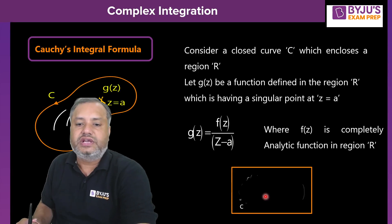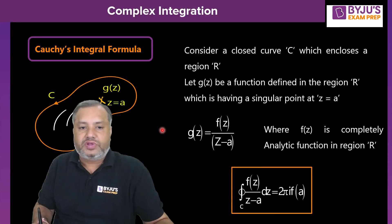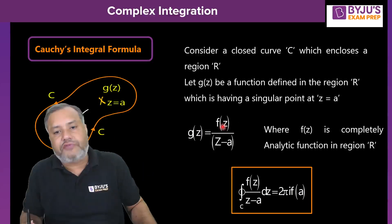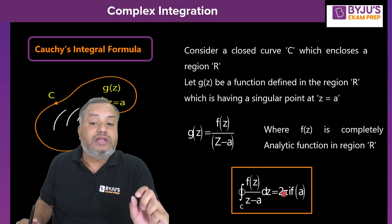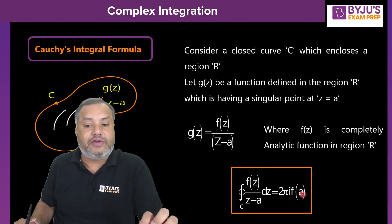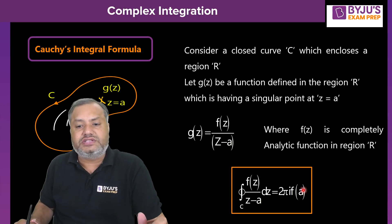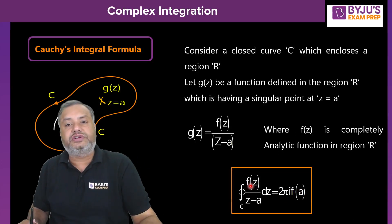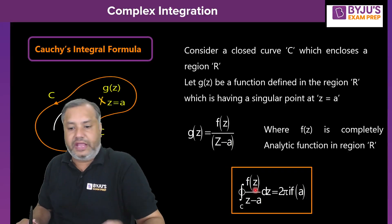If you wish to integrate g(z), i.e., f(z) / (z − a) over the closed curve, the answer will be 2πi · f(a), where f(a) means substituting z = a into the numerator function.